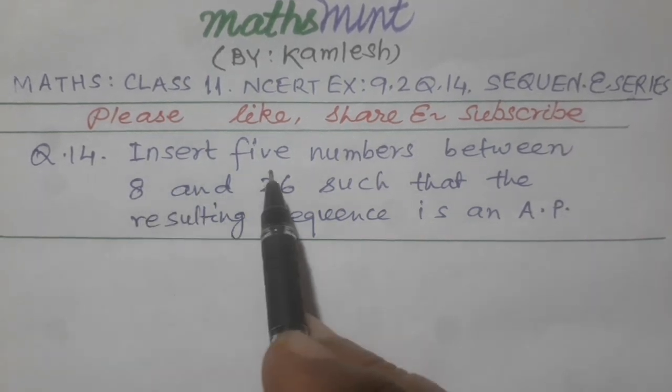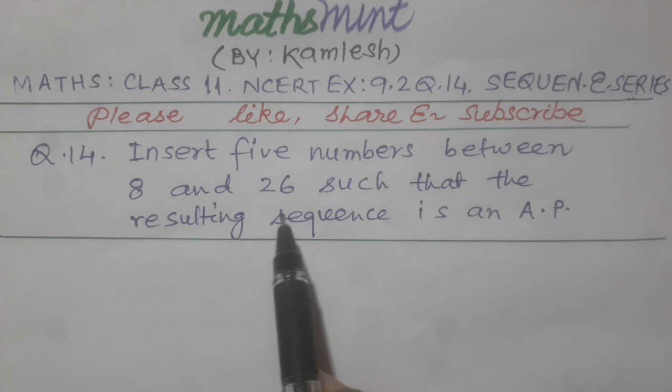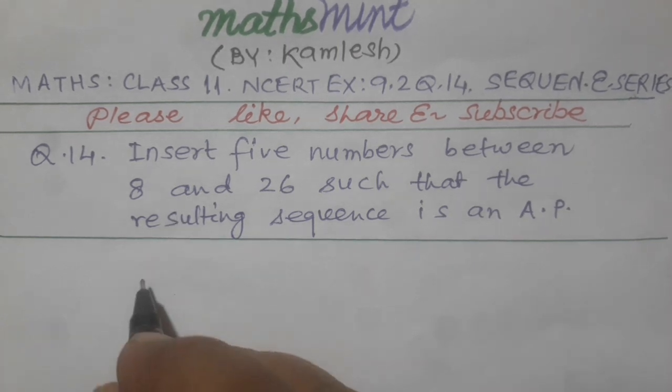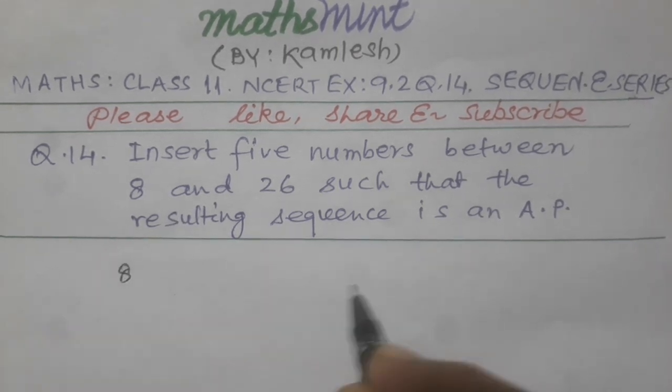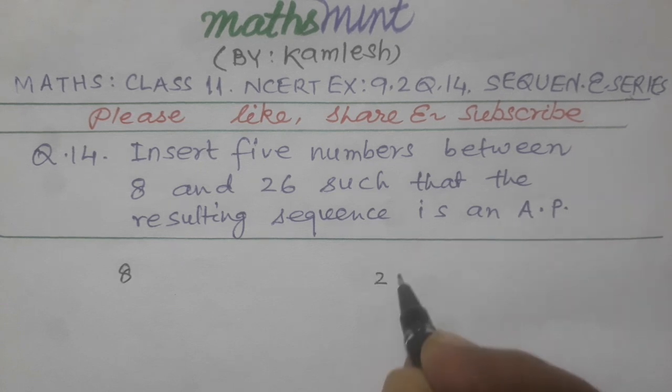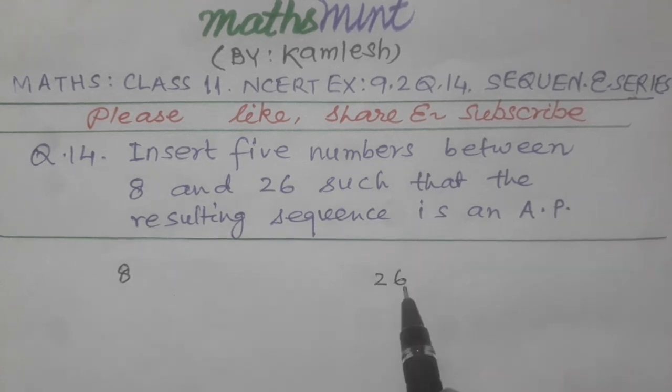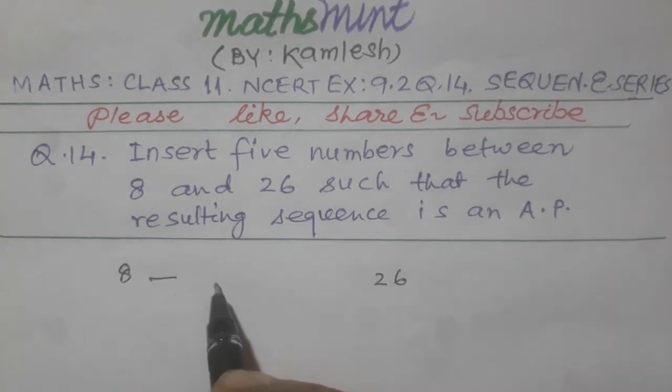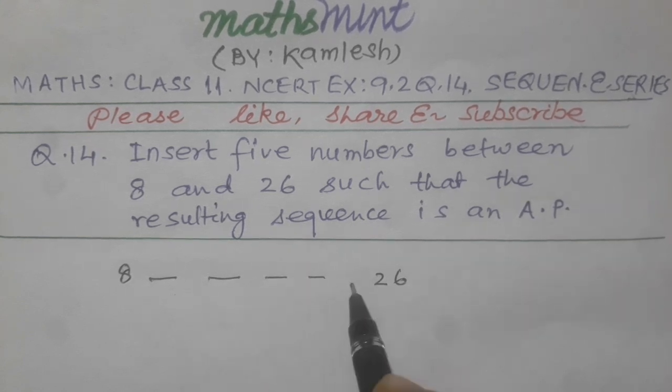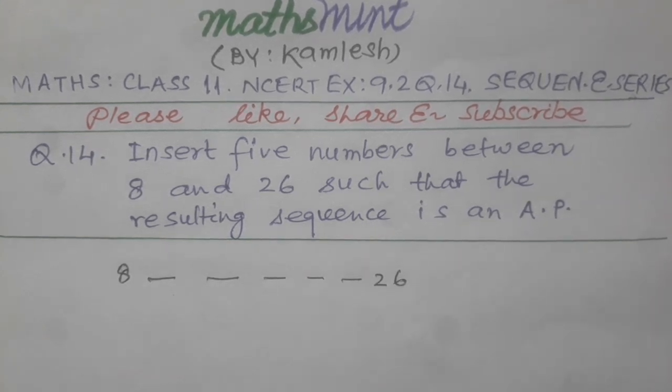In question it is given insert 5 numbers between 8 and 26. So one number is 8 and other number is 26, and between these two numbers we have to insert 5 numbers such that the sequence will be an AP.